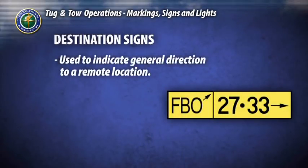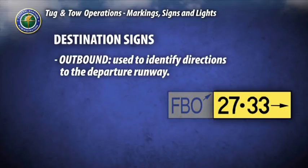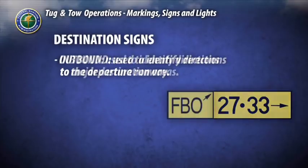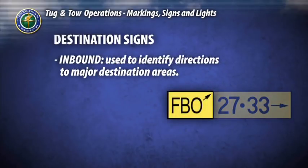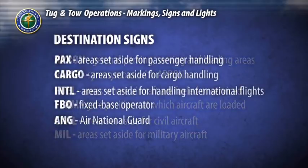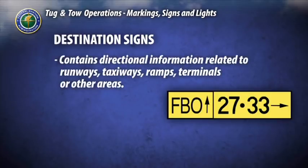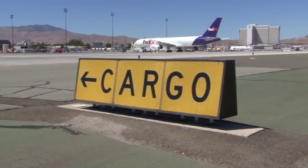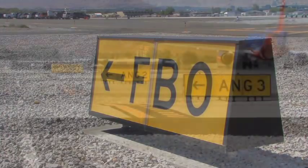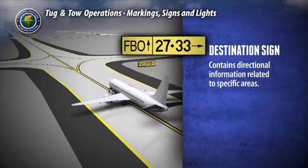Destination signs are used to indicate the general direction to a remote location. Outbound destination signs identify directions to the departure runway — more than one runway, separated by a dot, may be indicated. Inbound destination signs indicate the route to major destination areas, with common names and abbreviations displayed. The destination sign contains directional information related to runways, taxiways, ramps, terminals, or other areas, and will always have an arrow indicating the direction of the taxi route. For example, the FBO is straight ahead while runways 27 and 33 are to the right.